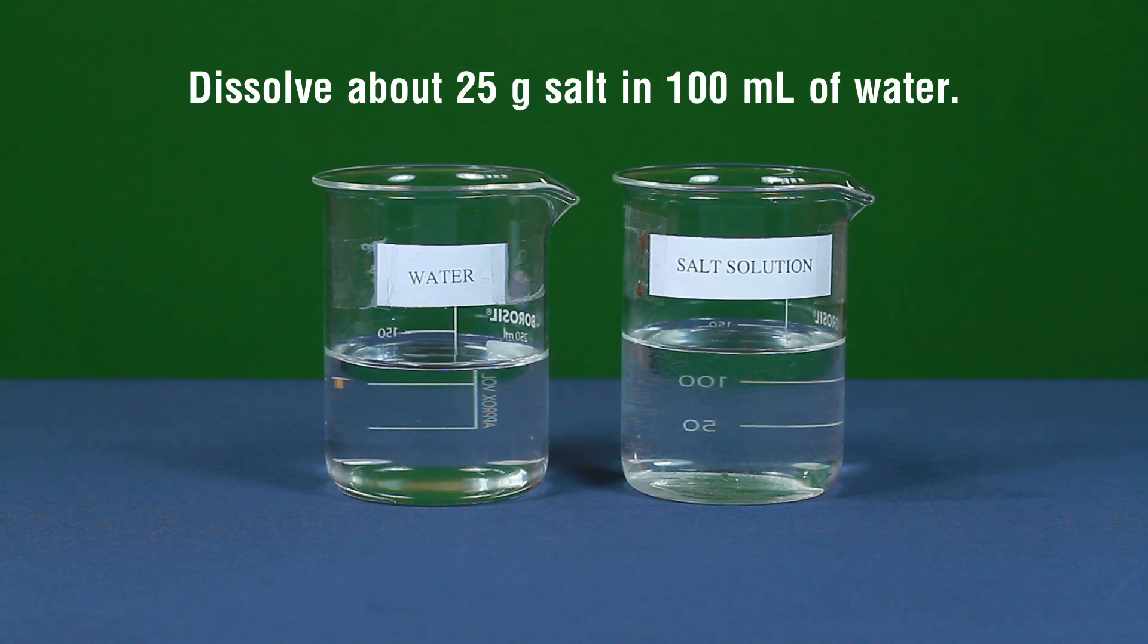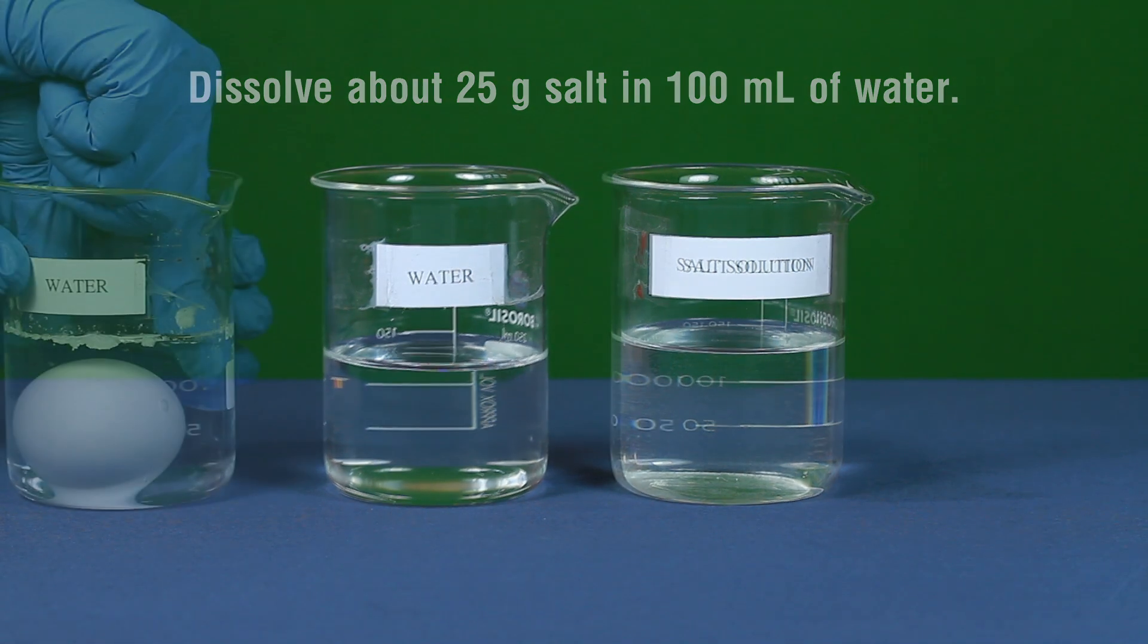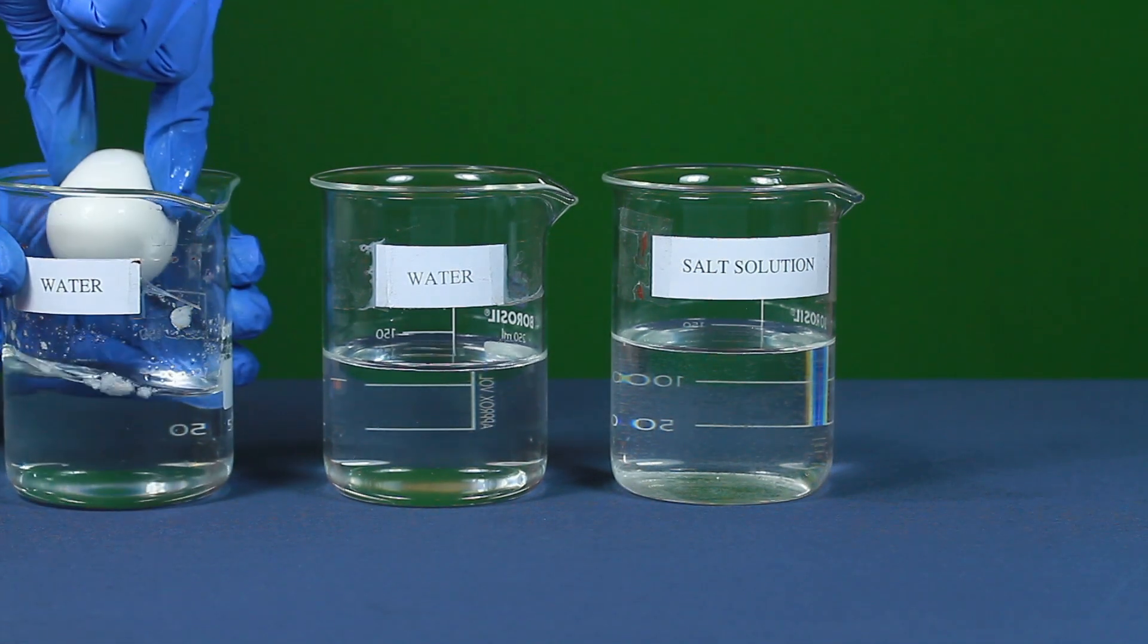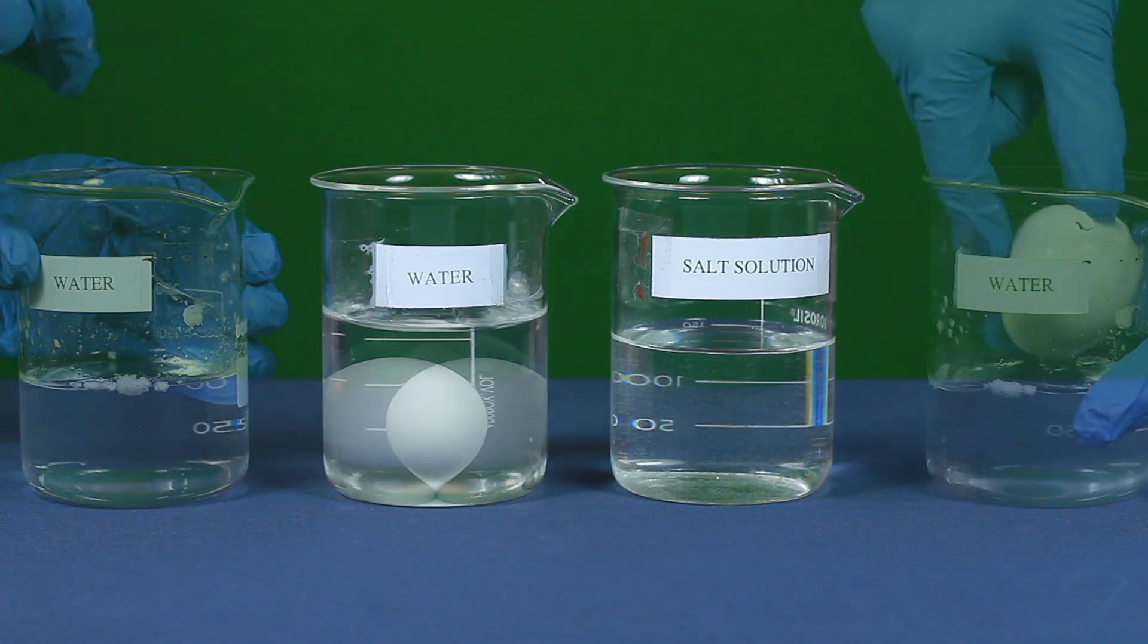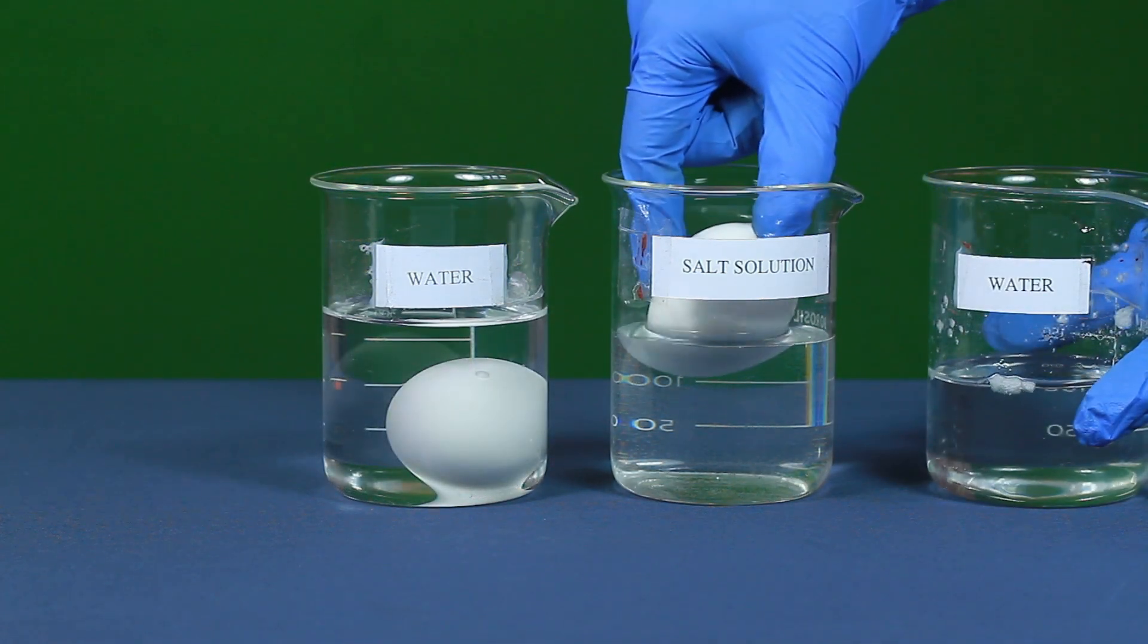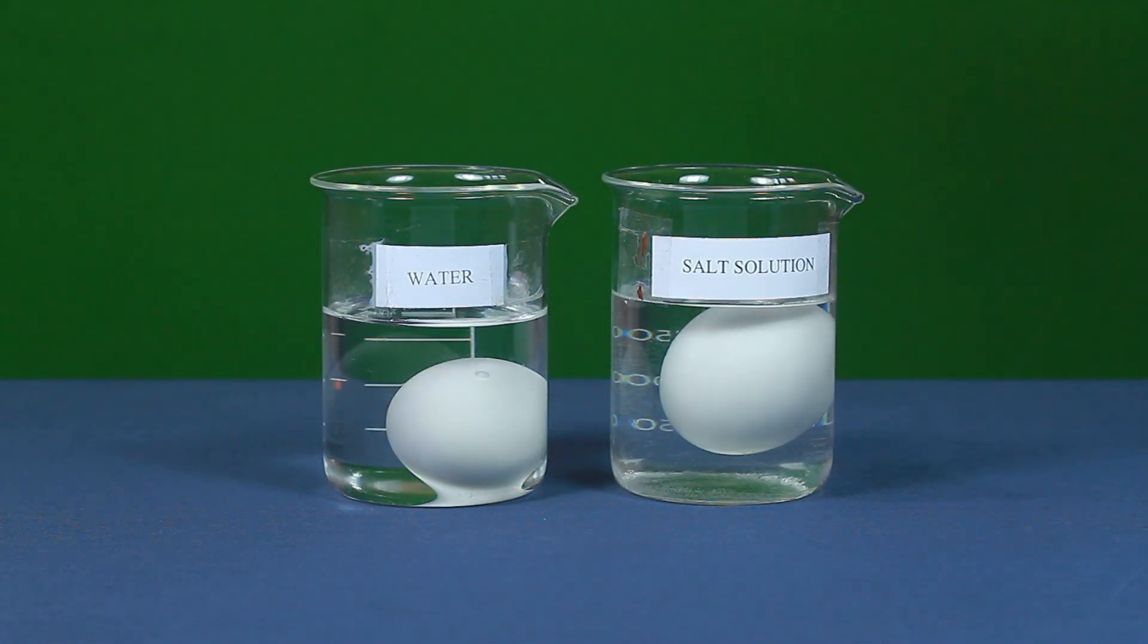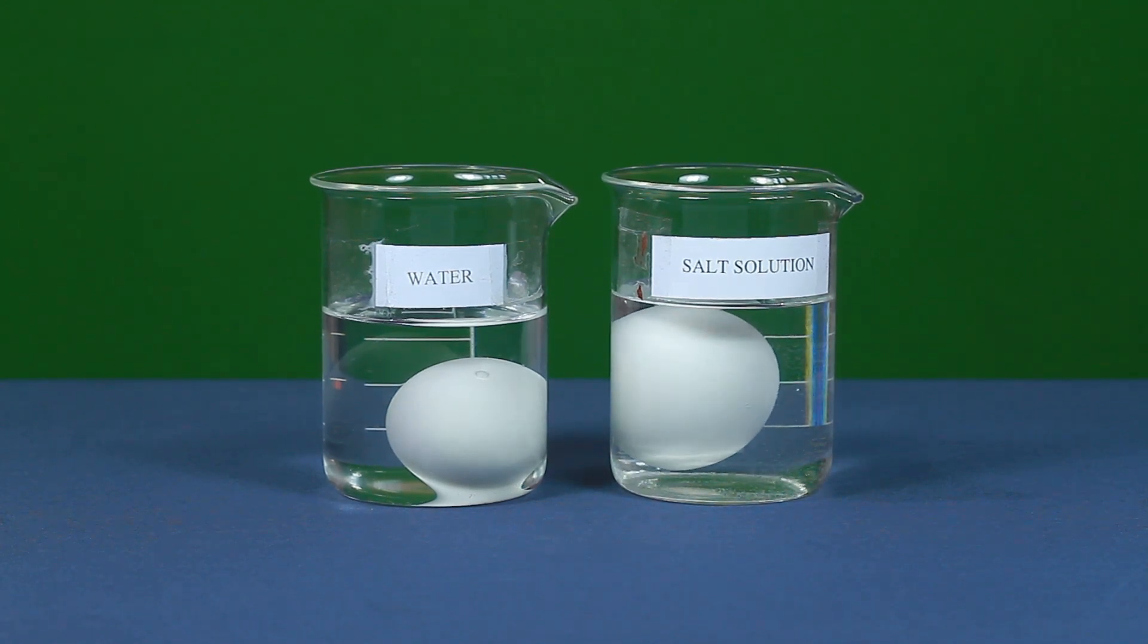Take one beaker containing water and the other beaker containing salt solution. Drop one of the de-shelled eggs into the beaker filled with water and the other into the solution of concentrated salt. Leave the setup for about four hours and observe the two de-shelled eggs.